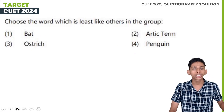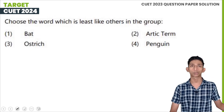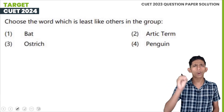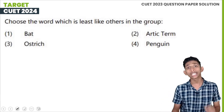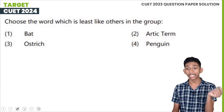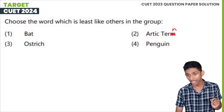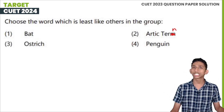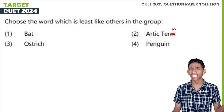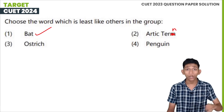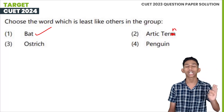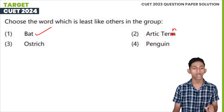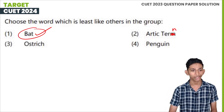The next question: choose the word which is least like the others in the group. The four terms share a common feature. Arctic tern is a bird. Ostrich is also like a penguin — they are all birds. Batch is not an ostrich, penguin, or Arctic tern. The others are birds, but batch is not a bird, so batch is the odd one out.